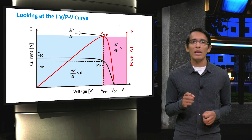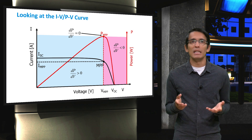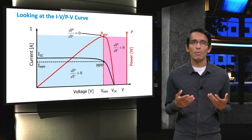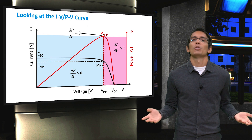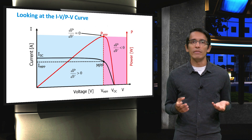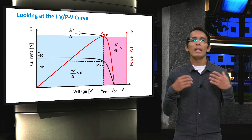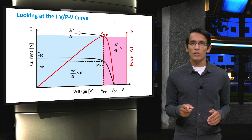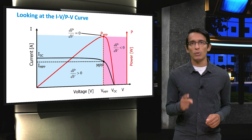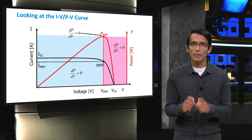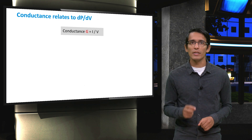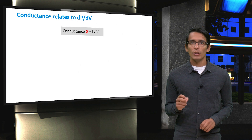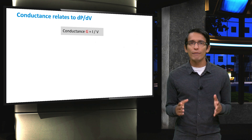Now you can see that if there is a way to determine dP/dV, then we can easily determine which way to move in order to reach the maximum power point. The next logical question is: how do we get dP/dV from simple measurements? Is there a way to do this simply by looking at the voltage and current output? To answer this, we will look at the relationship between dP/dV and the conductance. Conductance, designated by the letter G, is the ratio between current and voltage — the mathematical inverse of resistance.